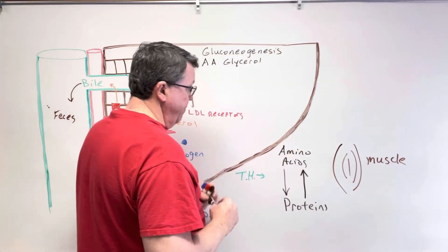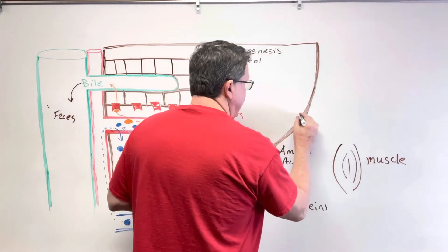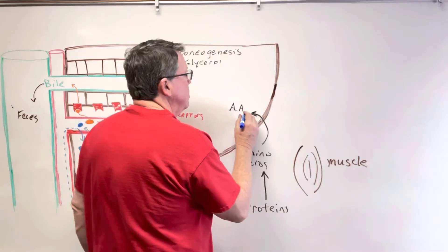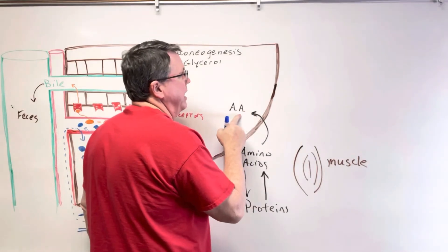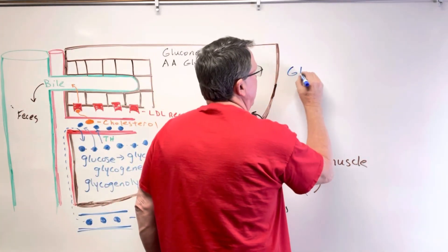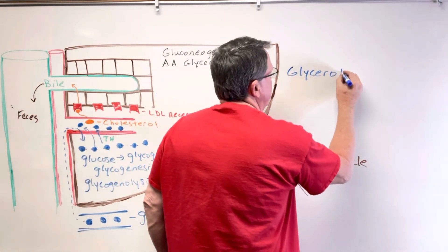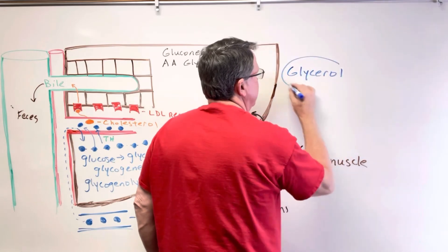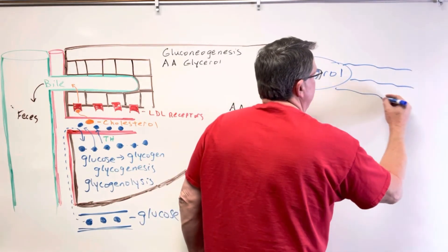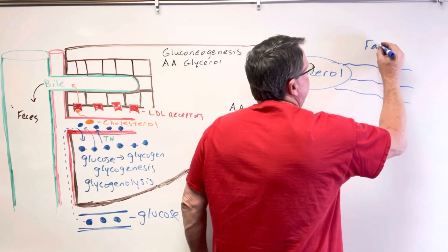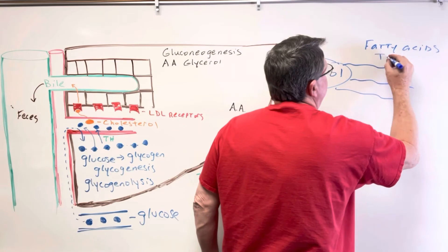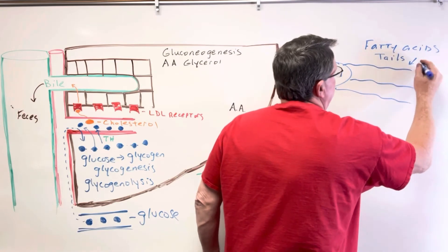The amino acids from muscle come and enter into the liver. Now I need to get the glycerol. We get glycerol from triglycerides — here's my glycerol molecule, and then there are three fatty acid tails, which is why it's called a triglyceride.